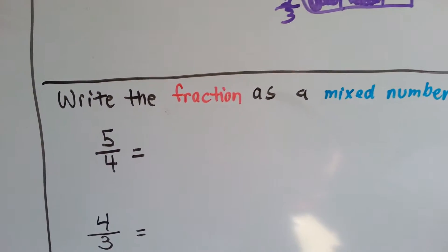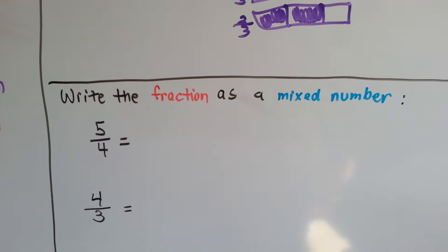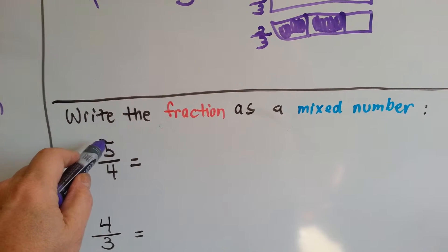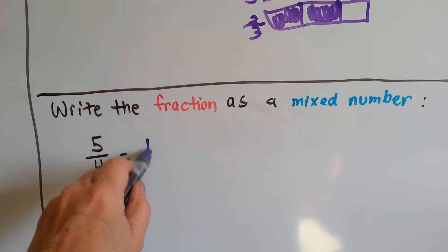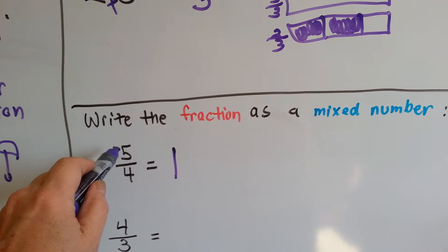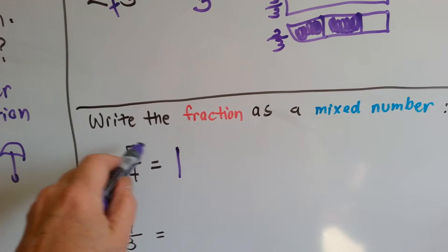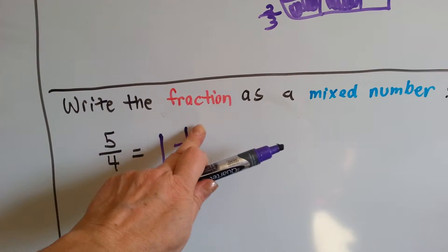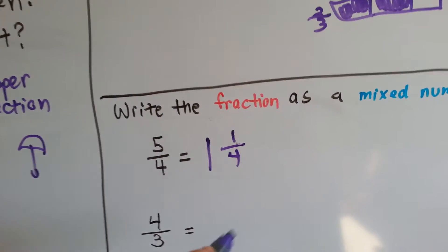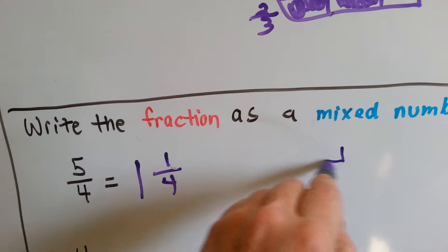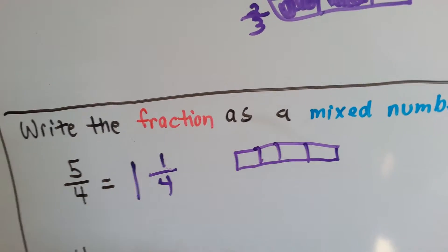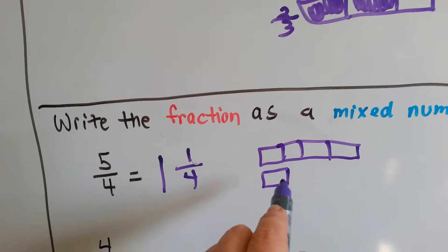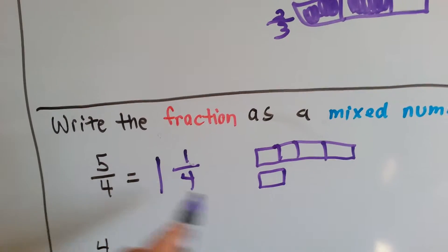What if you wanted to write the fraction as a mixed number and undo everything we just did? We would say how many fours fit into the five — one — and how much is left over? Four plus one is five, so one is left over, and it already gave us the denominator we're using. So it would be one and one-fourth. Four-fourths is a whole one, and one more fourth would be five-fourths, and we'd have one and one-fourth.